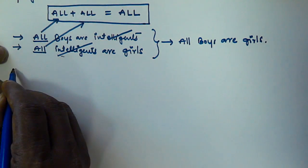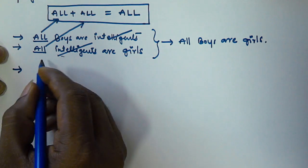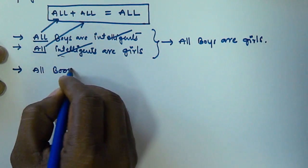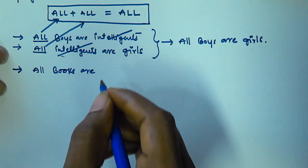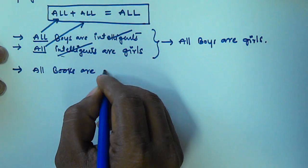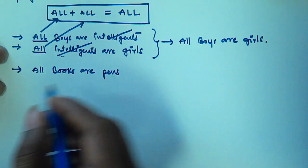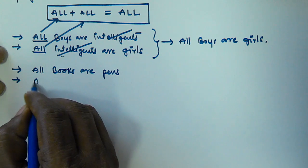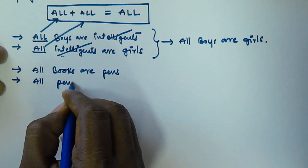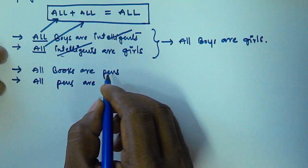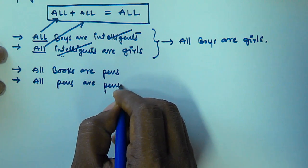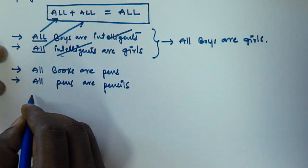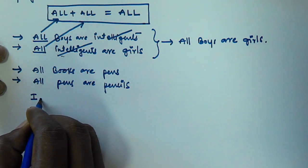Now let's see one example based on this logic. Two syllogisms are given: all books are pens, and all pens are pencils. Two conclusions are also given.